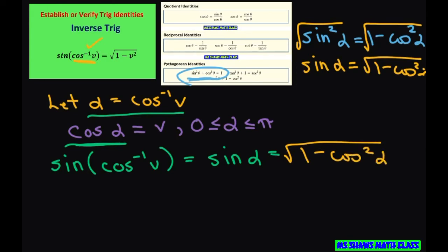Now all we have to do is simplify this. We need 1 minus v squared. Well now we have it. Since cosine of alpha is v, we're substituting it back. But we have a square so you square it.